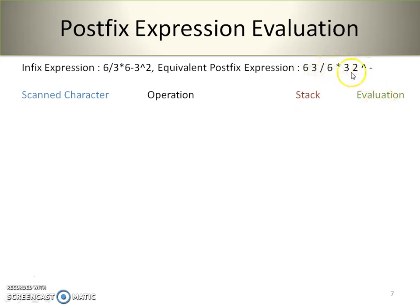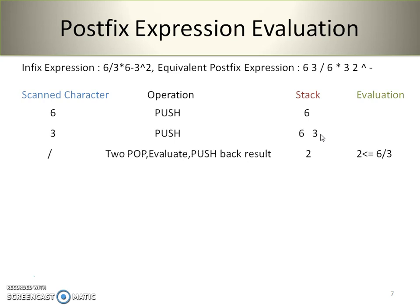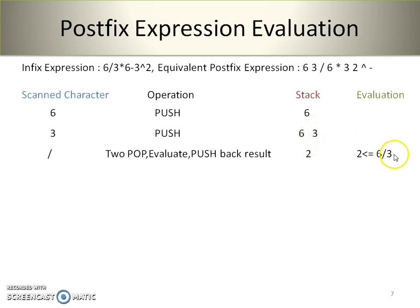Let's start with the postfix expression. The first scanned character is 6 — it is an operand, so push onto the stack. The next is 3 — again an operand, push onto the stack; the stack now holds two operands. The next scanned character is the division operator. We perform two consecutive pop operations: the first popped operand becomes the second operand and the second becomes the first, giving 6 divided by 3. The result is 2, and we push it back onto the stack.